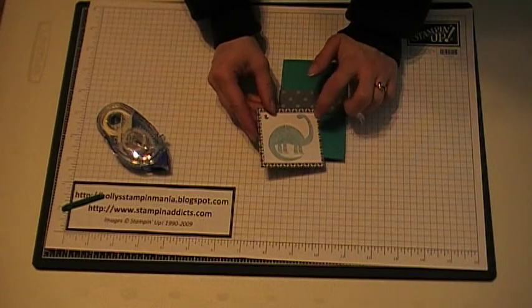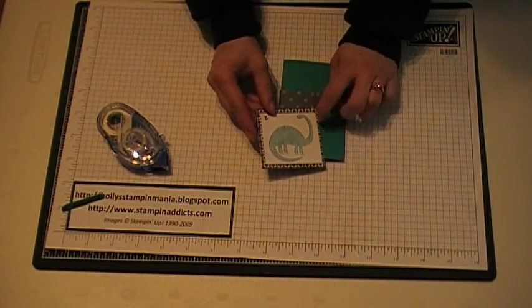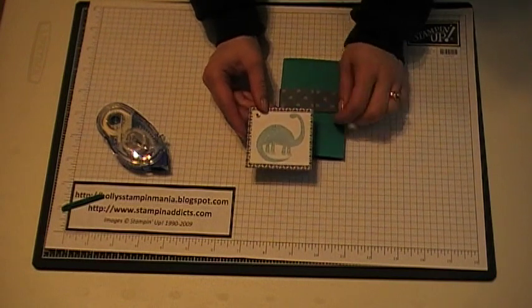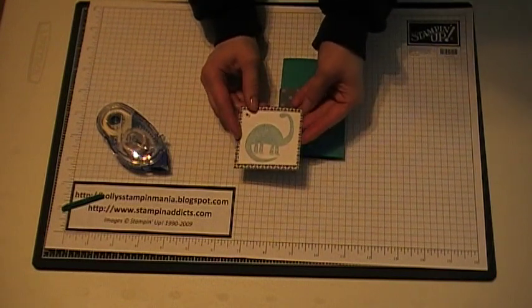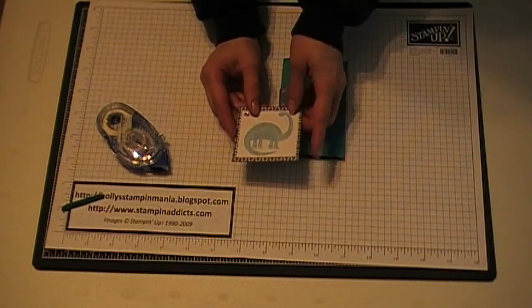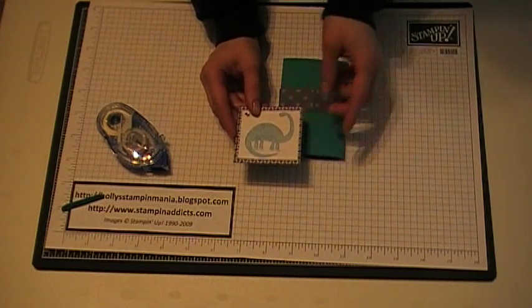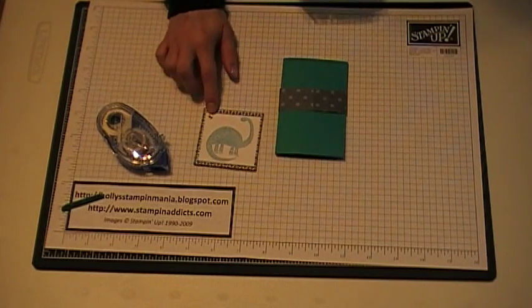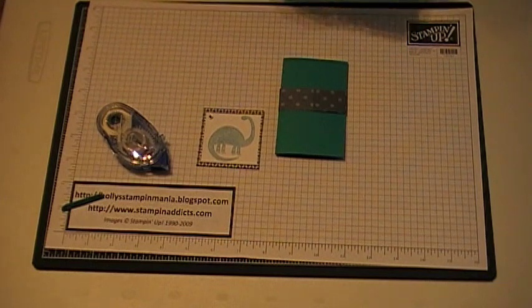And I stamped cardstock at two and a quarter by two and a half, and I stamped the dinosaur in taken with teal, and then I layered that on another piece of our Patterns Pack 2 from the Hostess set. And then I cut that two and a half by two and a half. And then I set a metallic eyelet up here on the corner just to add a little bit to it.